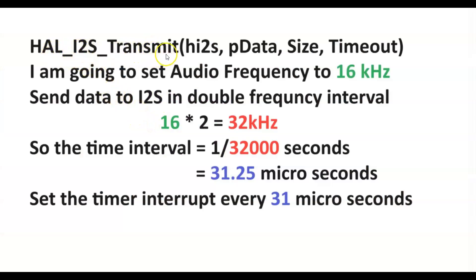You can use DMA or interrupt. The frequency I am going to set is 16 kilohertz, so the data we need to transmit is double the frequency — that means 32 kilohertz. So the time interval is 1 divided by 32 kilohertz, which is 31.25 microseconds. So what I do is I set a timer interrupt for every 31 microseconds.